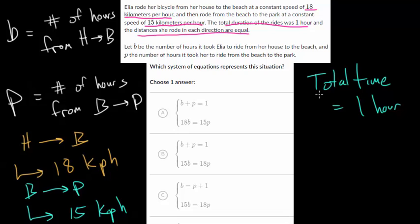Let's start with this idea of the total time being equal to one hour. We know that B is the number of hours from the house to the beach, and P is the number of hours from the beach to the park. So the total time is just the sum of these, B plus P. Since they're both in units of hours, if we add them together, we'll still get units of hours. So we can say that B plus P is equal to one.